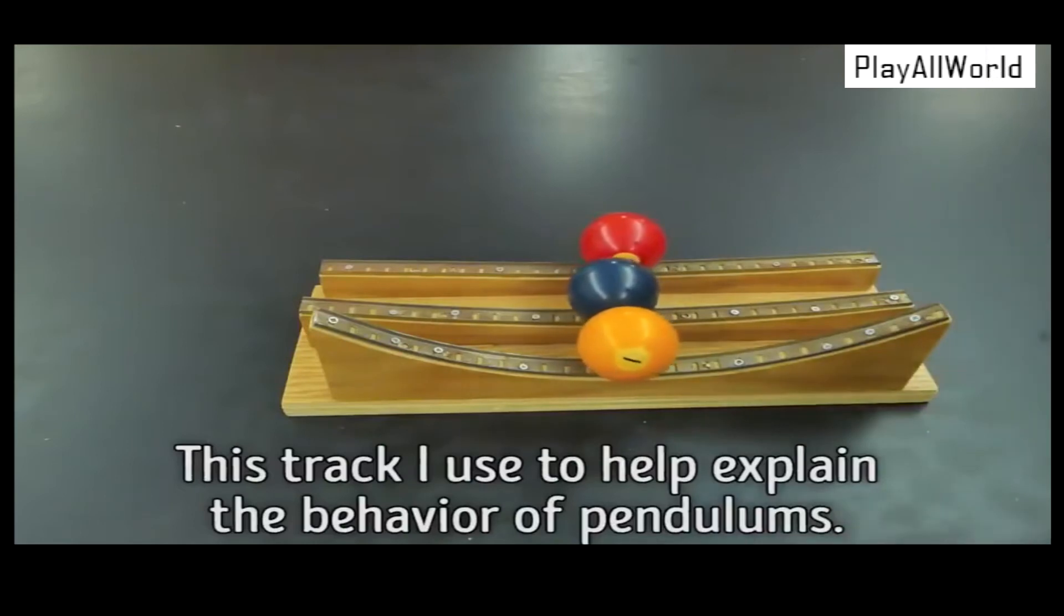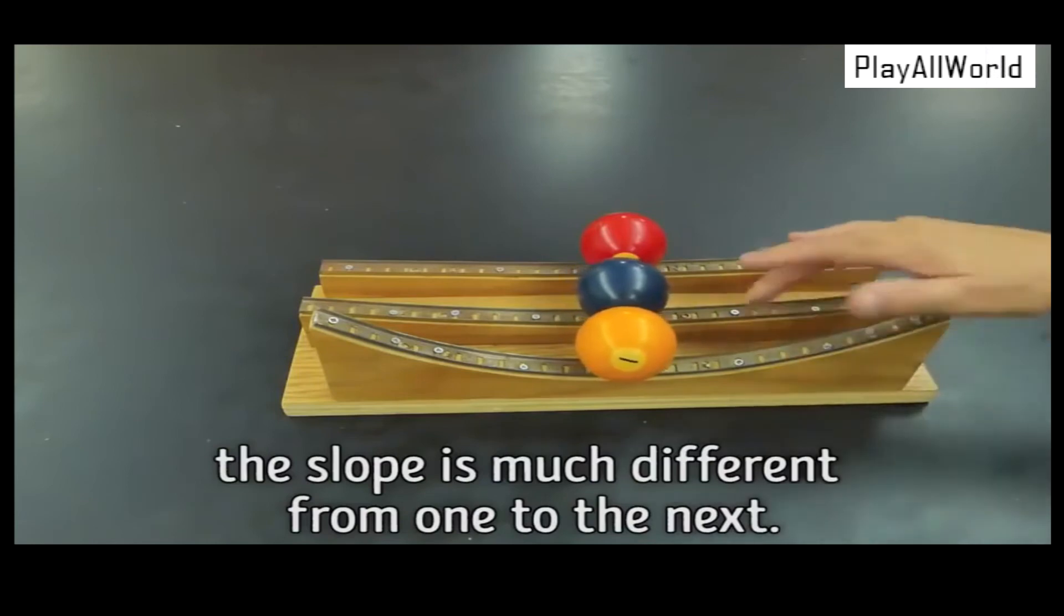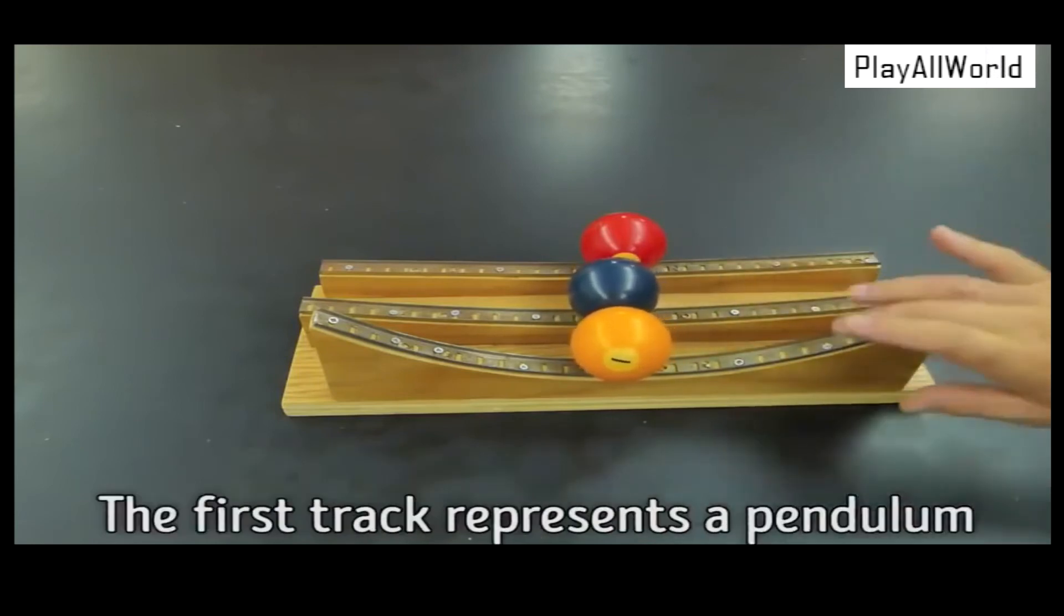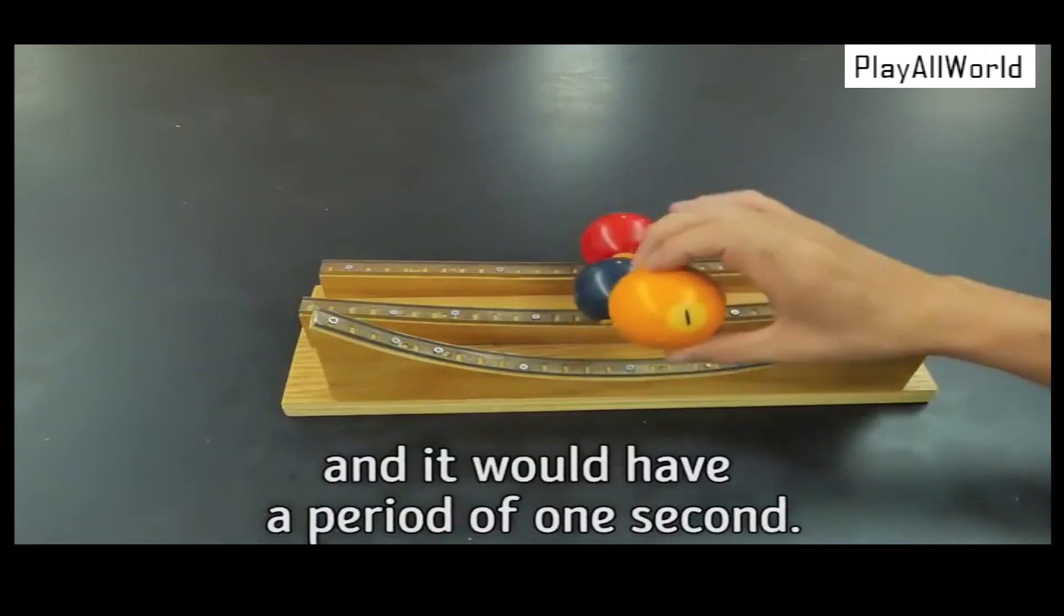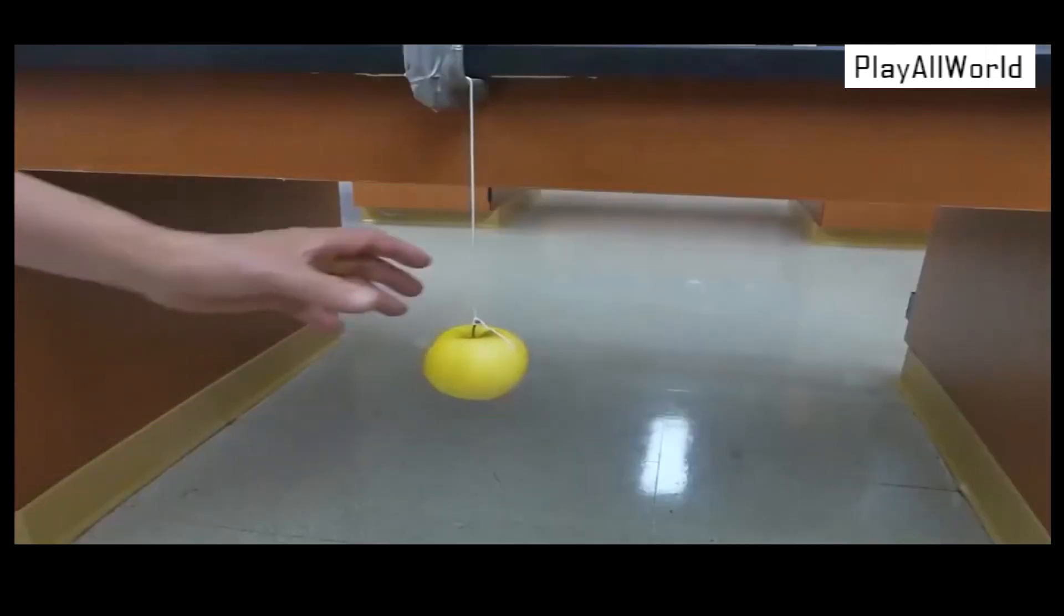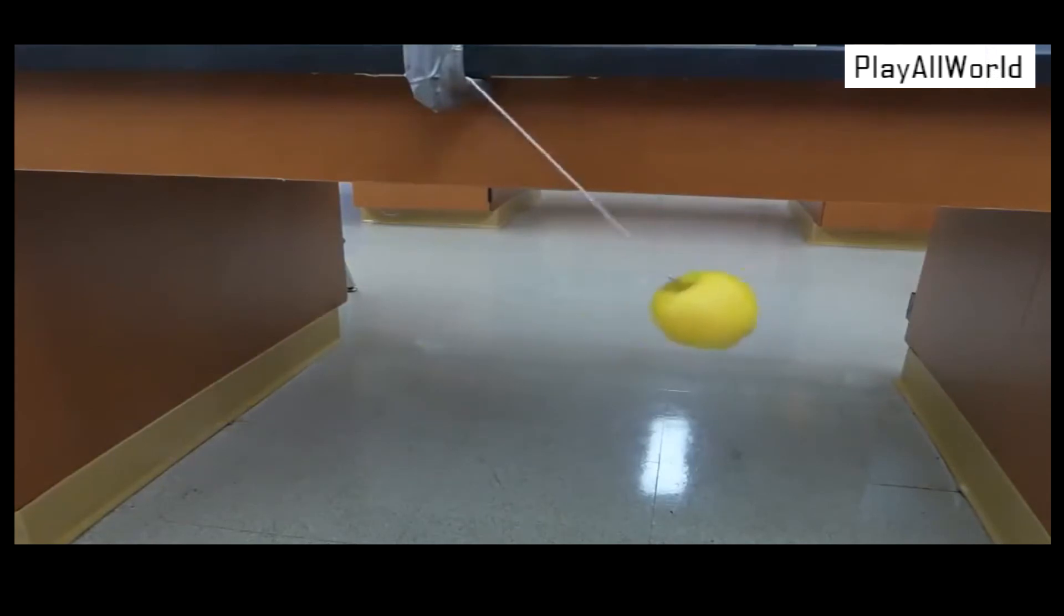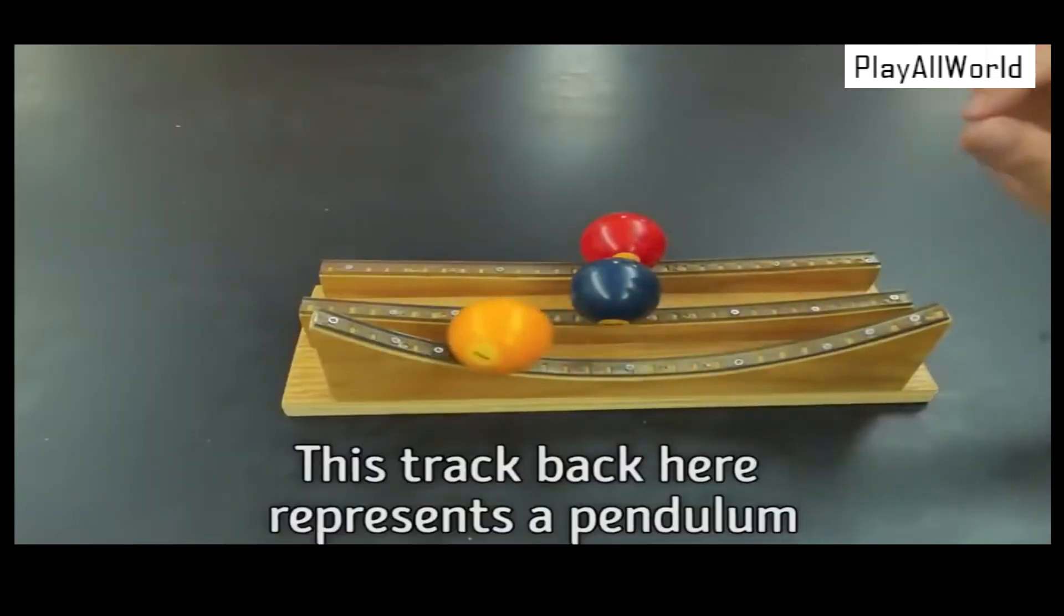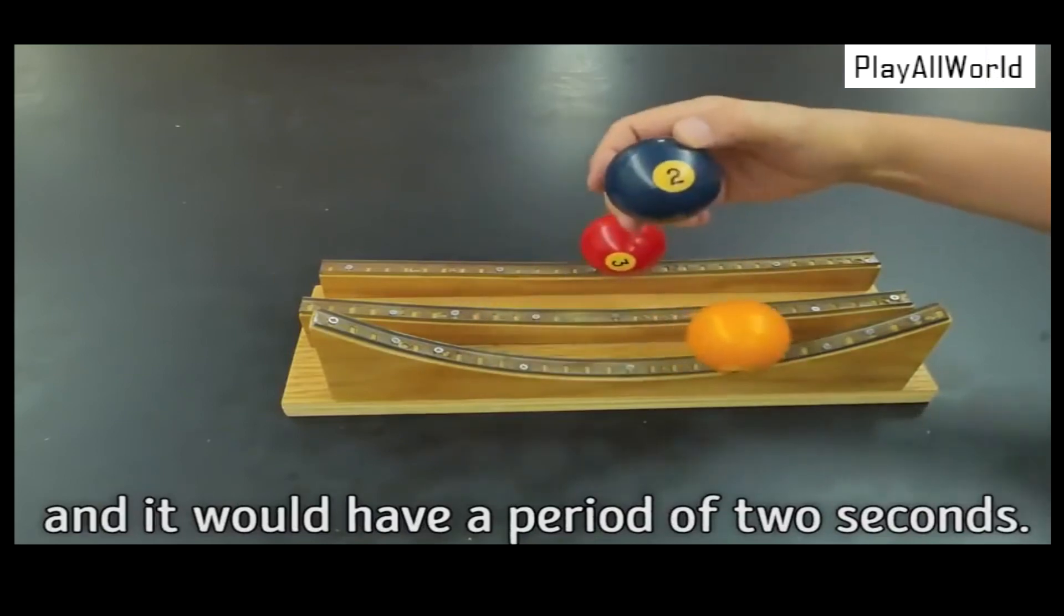This track I used to help explain the behavior of pendulums. The tracks are the same length, but as you can see, the slope is much different from one to the next. The first track represents a pendulum that is 24 centimeters long, and it would have a period of one second. This track back here represents a pendulum that would be 99 centimeters long, and it would have a period of two seconds.